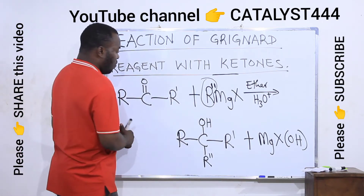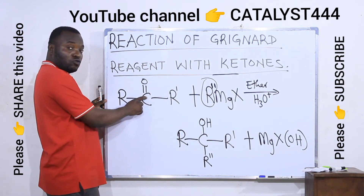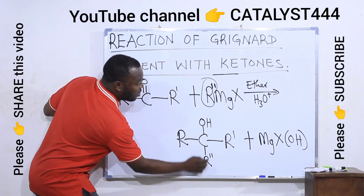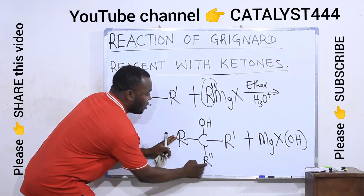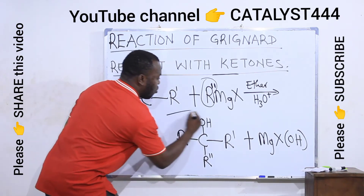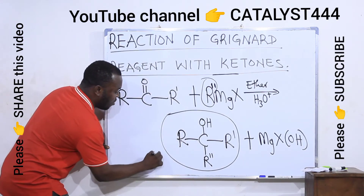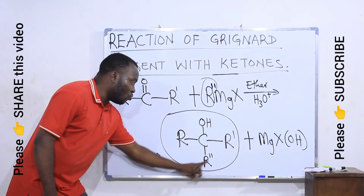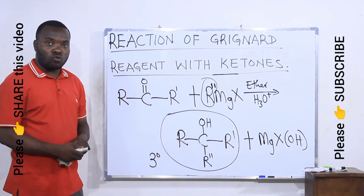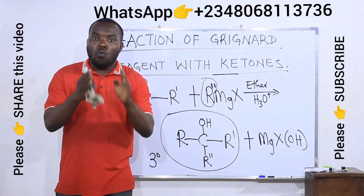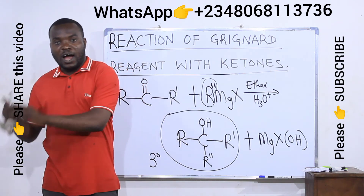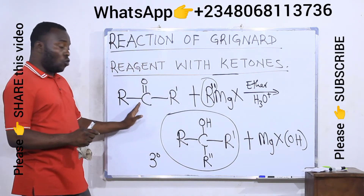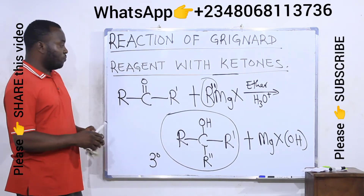Notice that in the ketone, there are two alkyl groups attached to the carbonyl group. When the product is formed, we now have three alkyl groups — the third one came from the Grignard. Since there are three alkyl groups bonded to the carbon carrying the OH, this alcohol belongs to the tertiary class — three degrees. In the previous video, when a Grignard reagent reacts with an aldehyde, a secondary alcohol is produced. But when a Grignard reagent reacts with a ketone, a tertiary alcohol is produced.